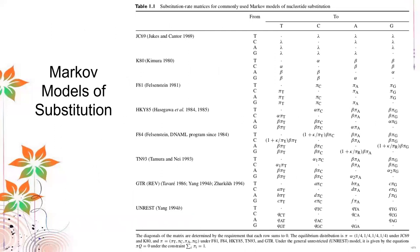Markov models of substitution apply Markov statistical models for statistical significance. We have several models developed over the years. The earliest is JC69 — made by Jukes and Cantor in 1969. We also have Kimura and Felsenstein. These substitution models were composed based on rigorous assessments of many different nucleotide sequence comparisons.